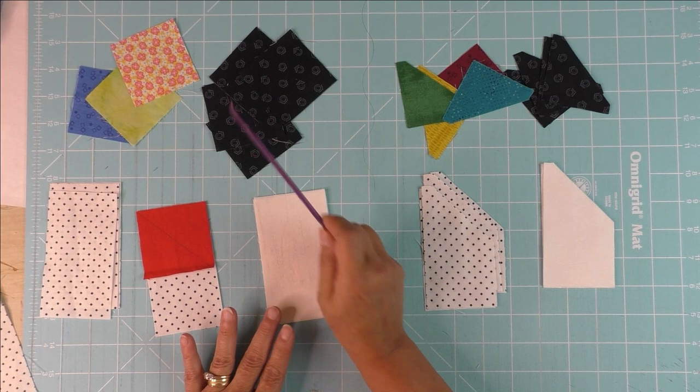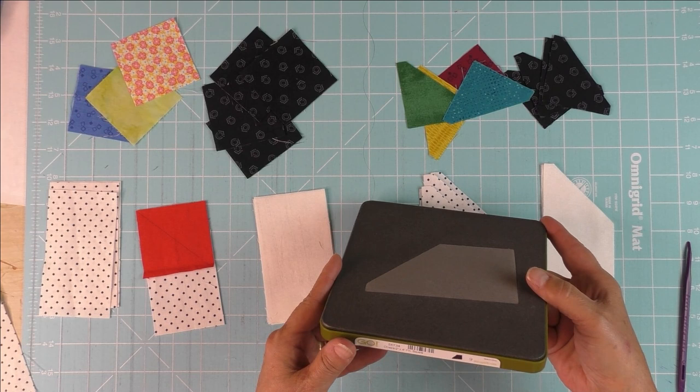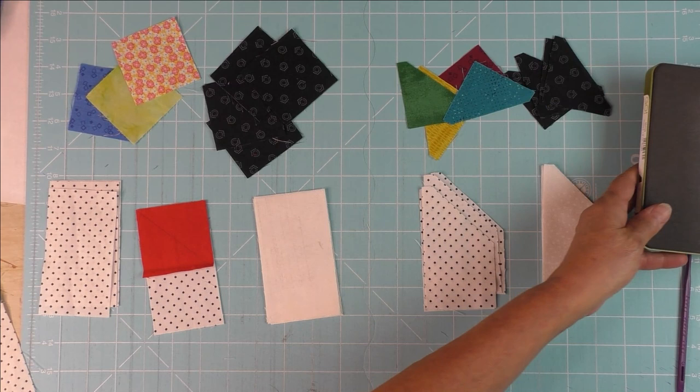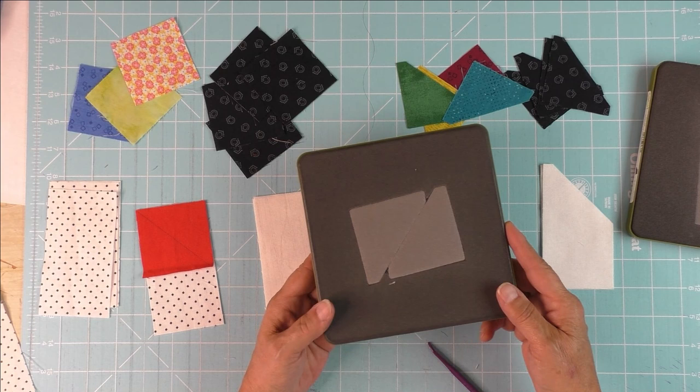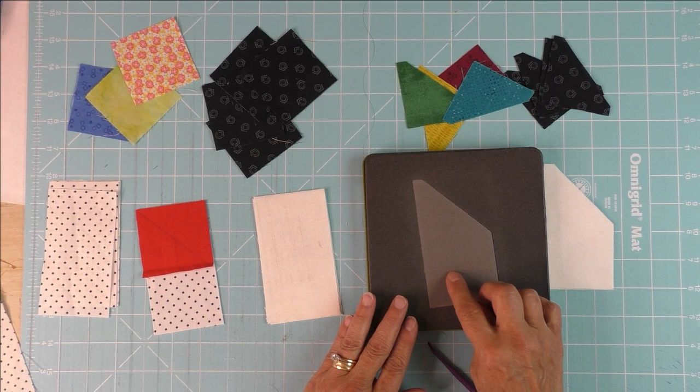For the AccuQuilt cutting, you're going to use two dies. This one is 55734 and it's the chisel die. This is the half square triangle die, it's 55712 and it's a two inch finished die. The one important thing about this die is you cannot fan fold your fabric.